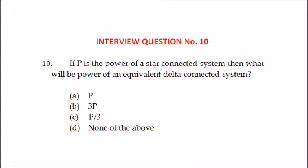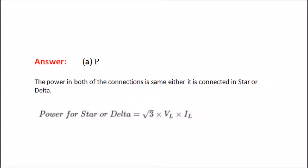Tenth question: if P is the power of a star-connected system, then what will be the power of the equivalent delta-connected system? The options are P, 3P, P divided by 3, or none of the above. The answer is P. Because the power in both connections is the same, whether connected in star or delta.